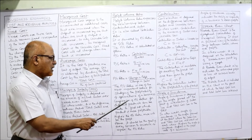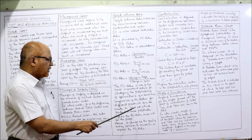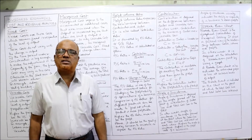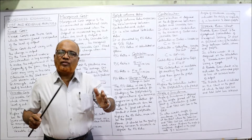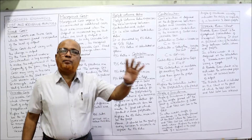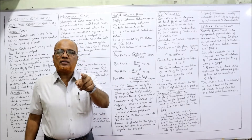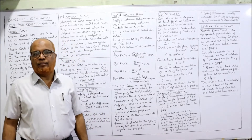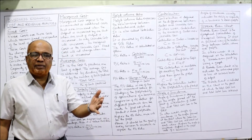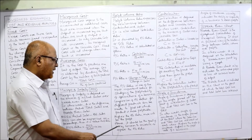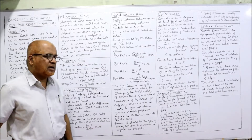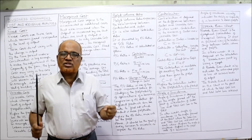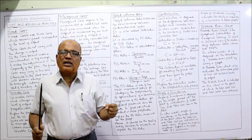One reason for calculating PV ratio is to compare the PV ratios of different products to determine which product is more profitable. Whichever product has a higher PV ratio is more profitable. Higher the PV ratio, more is the profitability rate. Hence it should be the goal of every concern to increase or improve the PV ratio.